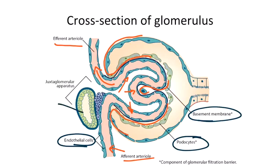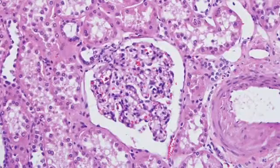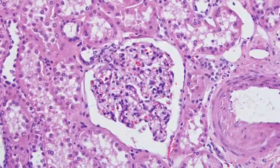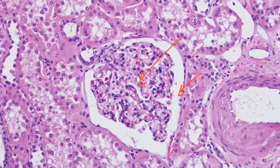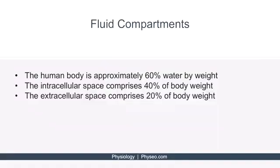The distal convoluted tubule is adjacent to the glomerulus. This is where the juxtaglomerular apparatus resides, which we'll discuss in more detail in future lectures. This is figure 4.4 from your text, which shows the normal histology of the glomerulus. This is the glomerulus, and here is Bowman's space. Blood is filtered from here into Bowman's space.